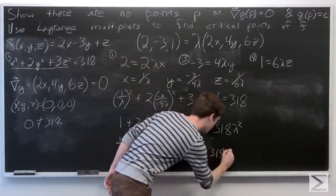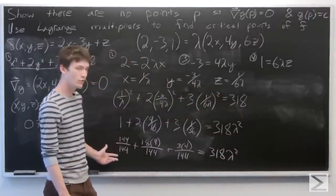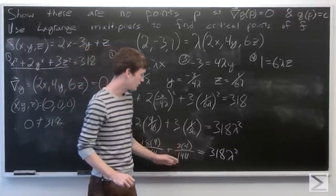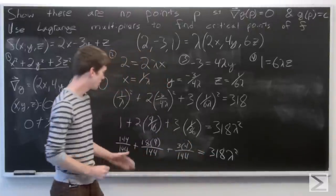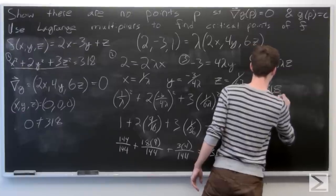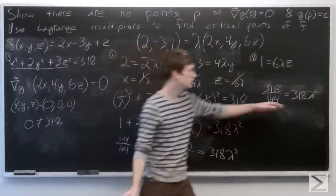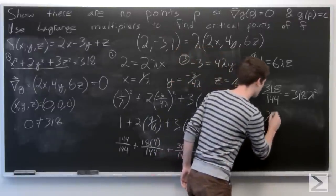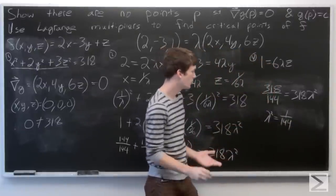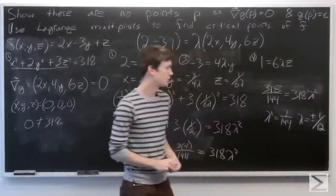We use a common denominator of 144. So we have 144/144 + 18(9)/144 + 3(4)/144 = 318λ². Combining these terms gives 318/144 = 318λ². Therefore lambda squared equals 1/144, or lambda equals ±1/12.